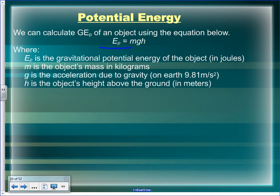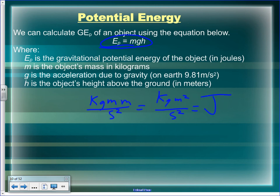The formula for potential energy is EP = m × g × h. The units for energy are joules. Mass is in kilograms, acceleration due to gravity is in meters per second squared, and height is in meters. Kilograms times meters times meters divided by seconds squared gives you kilogram-meters-squared per second squared — which is what a joule technically is.